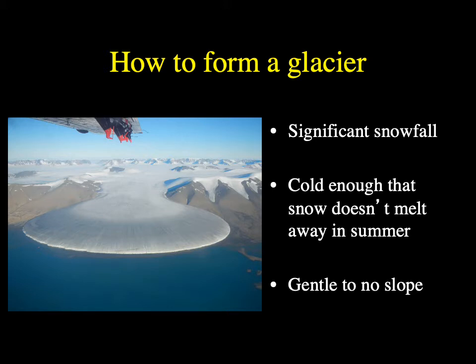We also need ice to accumulate on a very gentle slope or flat area. If you accumulate snow on a steep slope, it will move through an avalanche, so you won't get the buildup needed to create a glacier.